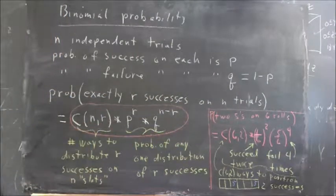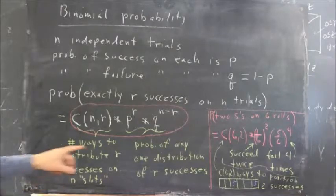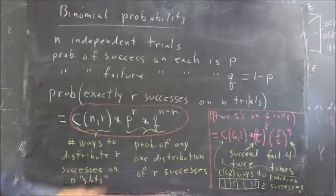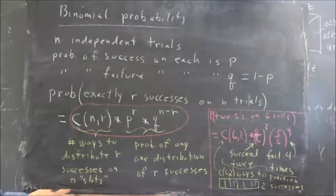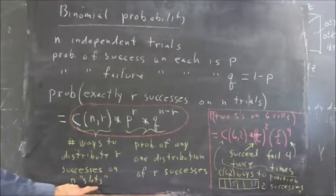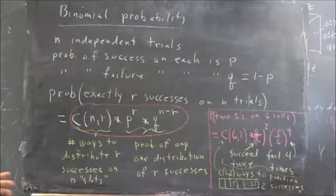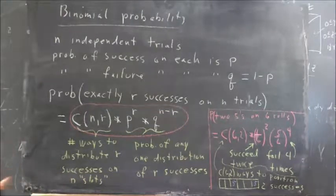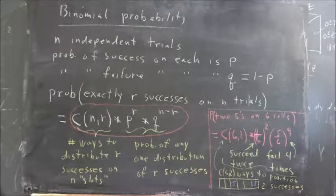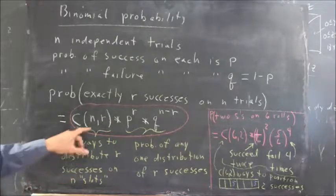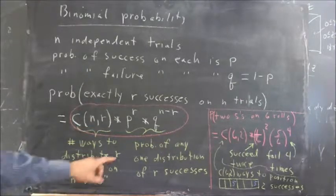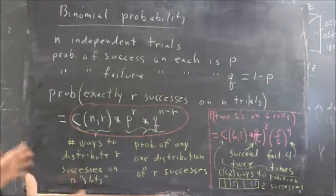The C of n, r, you recall, stands for the number of ways to distribute r successes over the n slots. If each trial is a slot, you have n slots to fill in with results of each roll, each flip, each birth, whatever it is. There are C of n, r ways to distribute the r successes over the n trials.